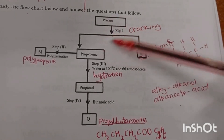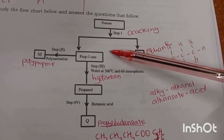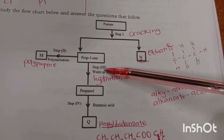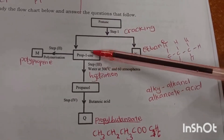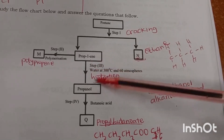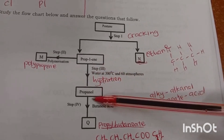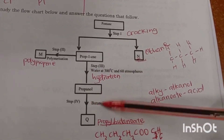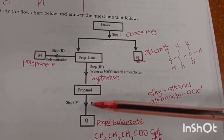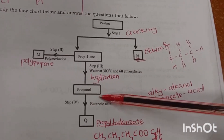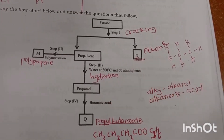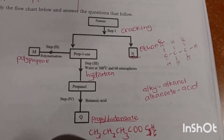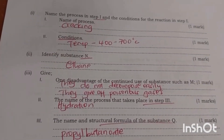M is polypropene. This process is cracking, where a large chain alkane is broken down into smaller chain alkane and an alkene. Then propene — when you add water, that is hydration — gives propanol. When you add butanoic acid you are carrying out esterification, giving propyl butanoate.